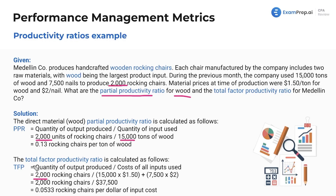Then our total factor productivity ratio — this is all the costs. We calculate 15,000 tons of wood times the price per ton, plus 7,500 nails times the price per nail. Add those together — that's the total costs expended. Dividing 2,000 chairs by that total gives us 0.0533 rocking chairs per dollar of input costs.